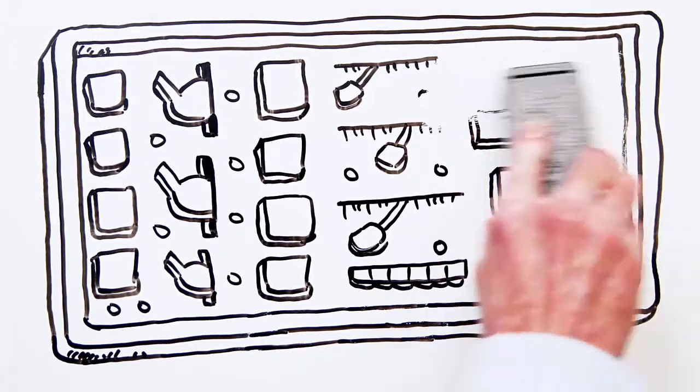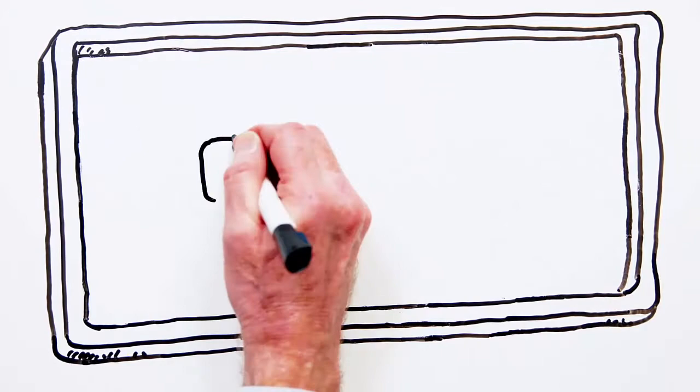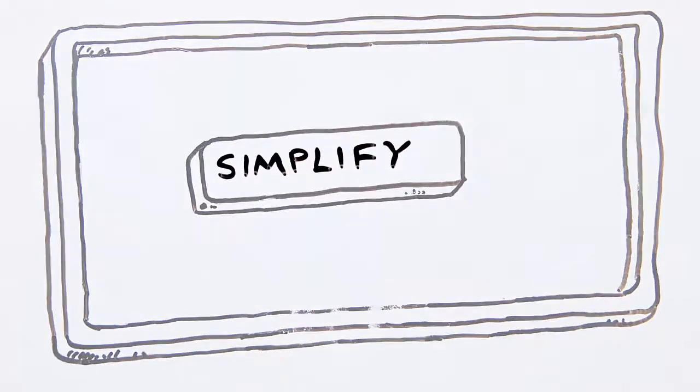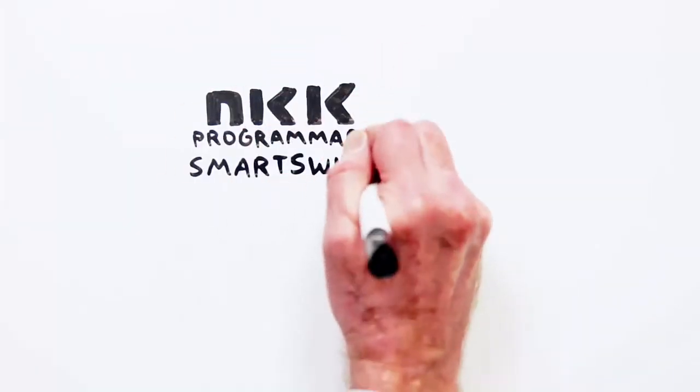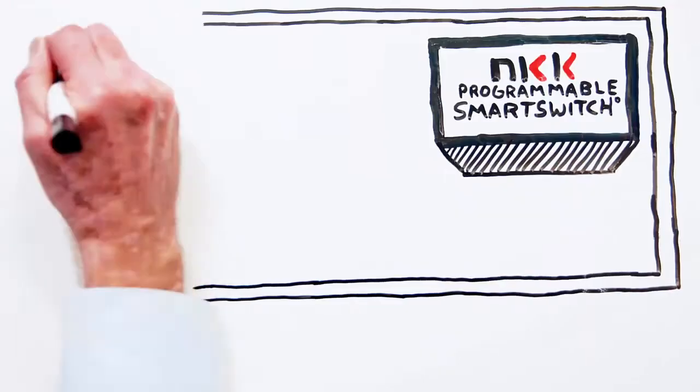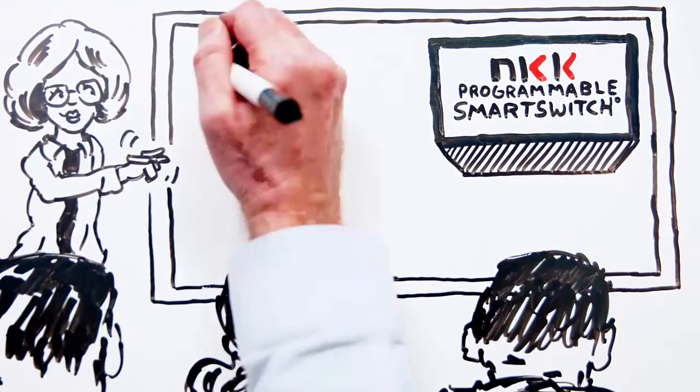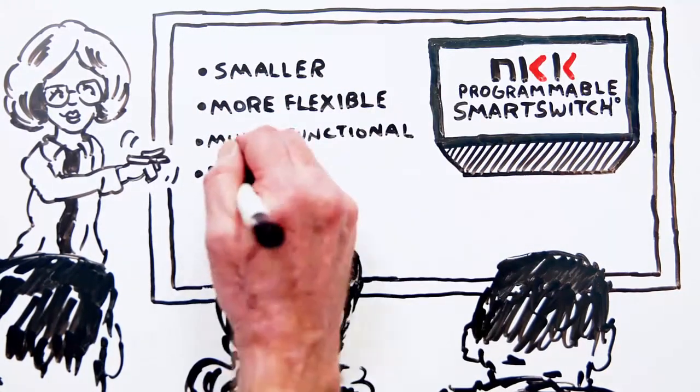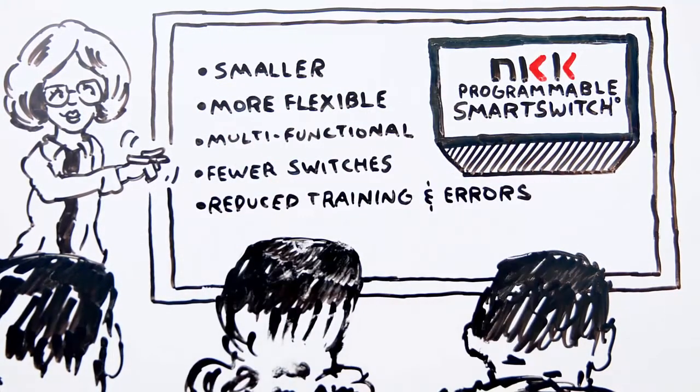Operators need all the help they can get in cutting through the clutter. Programmable, reliable switch technology in an application provides ease of use by keeping it simple. Leading this innovative switch technology is NKK's programmable smart switch product family, which allows control panels to become smaller, more flexible, and multifunctional, resulting in fewer switches and reduced operator training and errors.